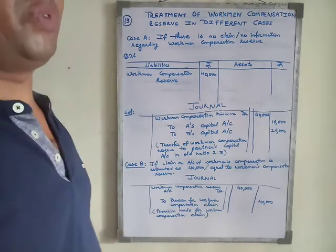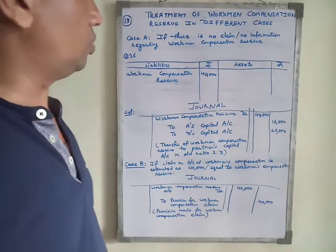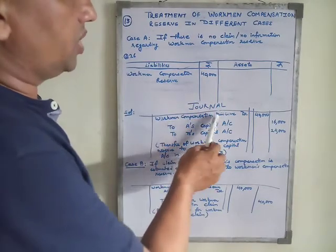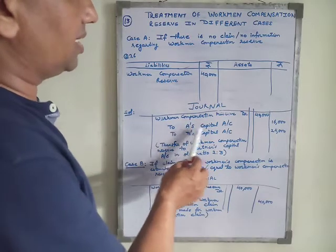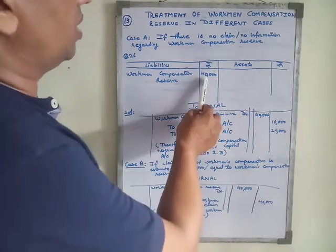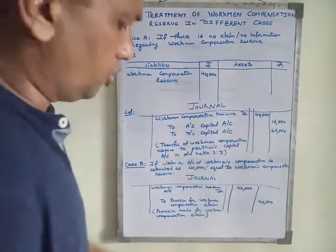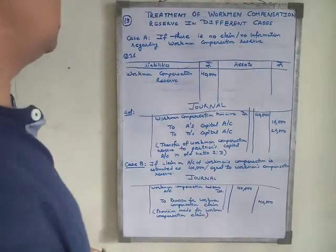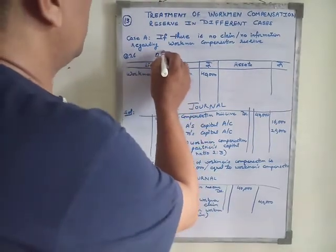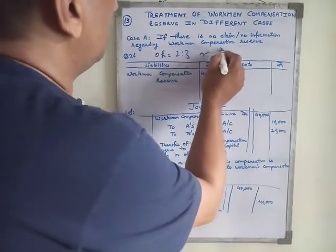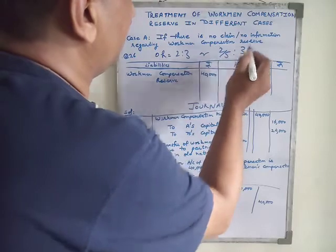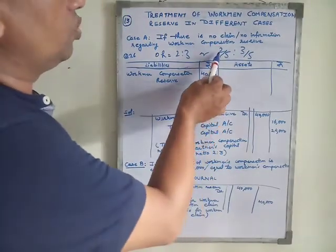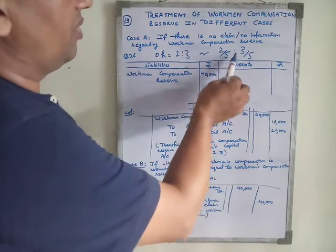The reserve, being part of the profit, is distributed to the old partners in their old ratio. This 40,000 is credited to partners' capital or current accounts — workman compensation reserve account is debited to A's capital account and B's capital account. The old ratio is 2:3, so the shares are 2/5 and 3/5 of 40,000, giving A 16,000 and B 24,000.